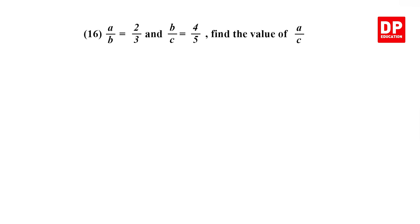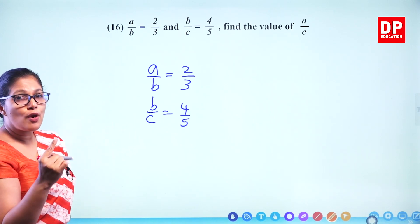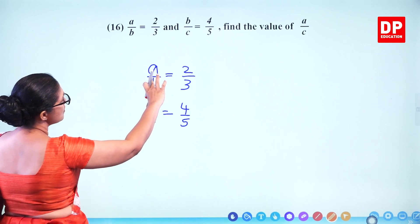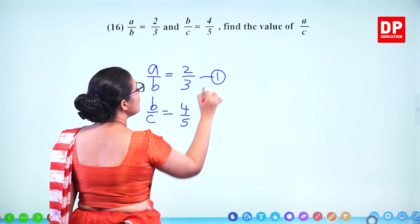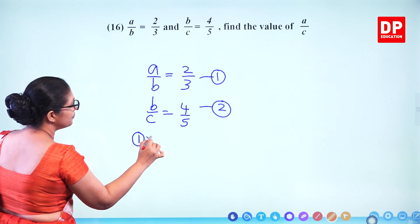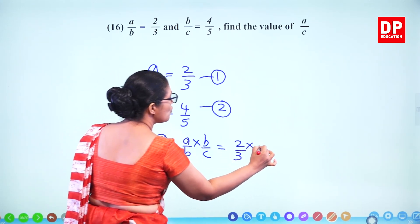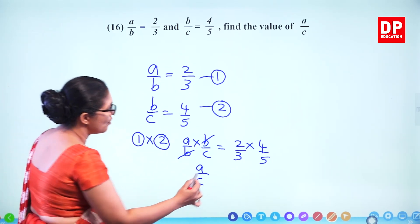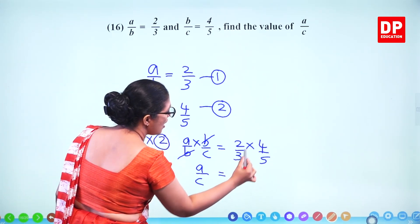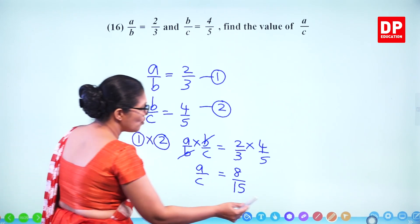Question number 16. Given a over b equals 2 thirds and b over c equals 4 fifths, find the value of a over c. Multiply the two ratios: (a/b) times (b/c) equals (2/3) times (4/5). The b cancels, giving a over c directly. The answer is 2 times 4 over 3 times 5, which is 8 over 15. Two marks.